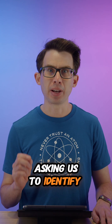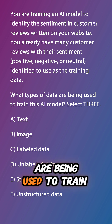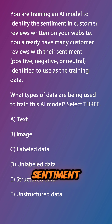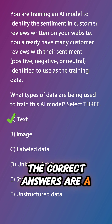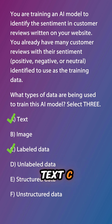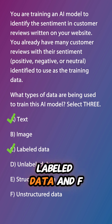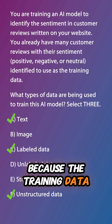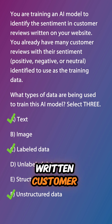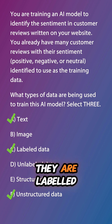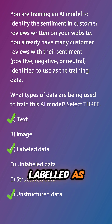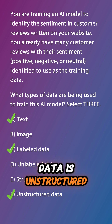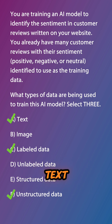The question asked us to identify what types of data are being used to train an AI model to predict customer sentiment. The correct answers are A. Text, C. Labeled Data, and F. Unstructured Data. The training data — written customer reviews — are text-based, labelled as positive, negative, or neutral, and unstructured as it's just freeform text.